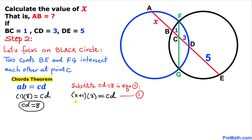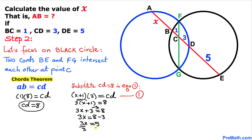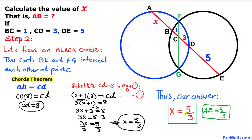Now let's substitute c · d = 8 into Equation 1: 3(x + 1) = 8. Distributing gives 3x + 3 = 8. Moving 3 to the other side: 3x = 5. Dividing both sides by 3, x equals 5 over 3. So our final answer is x = 5/3. Thanks for watching — please don't forget to subscribe to my channel for more exciting videos!